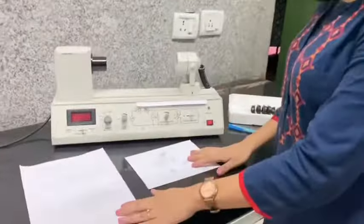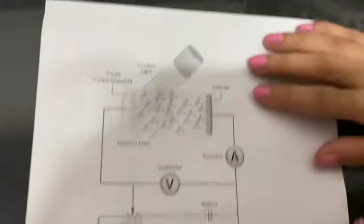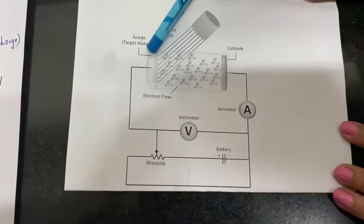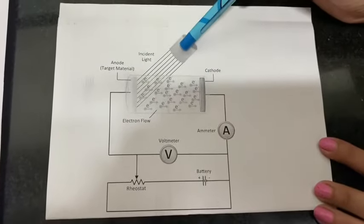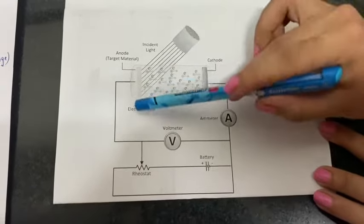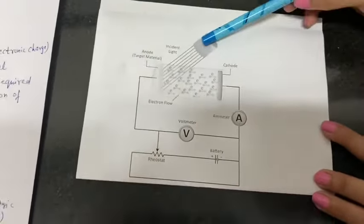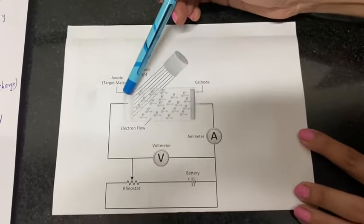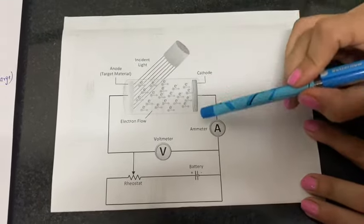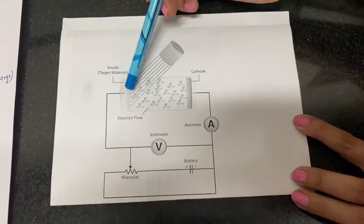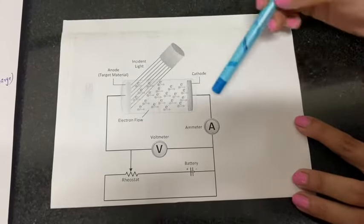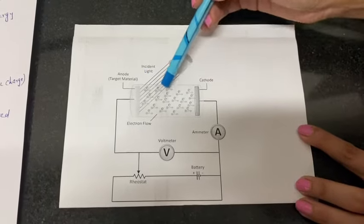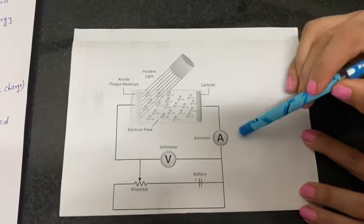Photoelectric effect can be understood with the help of this diagram. There is a metal surface on which light is falling from a source of light. When light of suitable frequency falls on the metal surface, electrons from the metal surface are ejected. There is a cathode, and when the electrons are ejected, they form a current in this circuit. The ejected electrons are called photoelectrons and the current they constitute is called photocurrent.